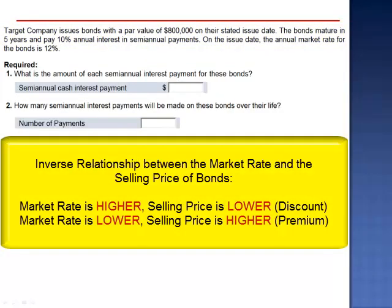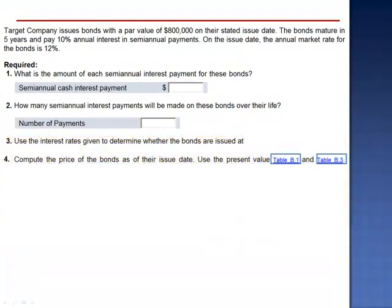We know that there's an inverse relationship between the market rate and the selling price. When the market rate is higher than the contract rate, the selling price will be lower. We expect this bond to sell at a discount. But let's go through and do the calculations.